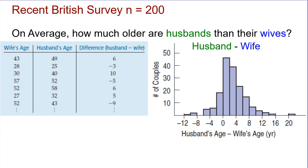There was a recent British survey that asked 200 couples — they asked the husband's age and the wife's age — and then found the difference. We have the wife's age, the husband's age, and the difference between husband minus wife. The reason they put the husband's age first is because they expected husbands to be older and wanted to make the differences positive. We usually put the bigger values before the second set of values we think would be smaller.